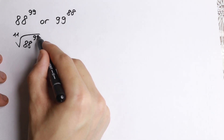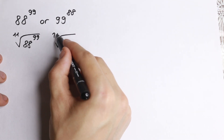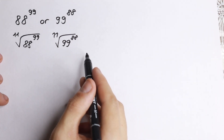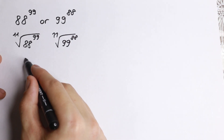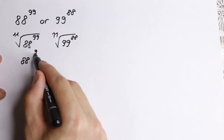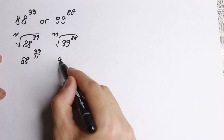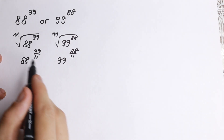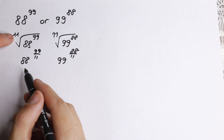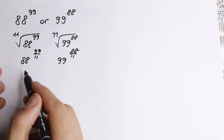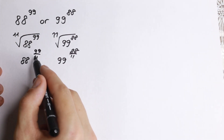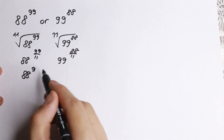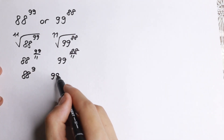So we can easily take the 11th root from both sides. On the left we have 88, and on the right we have 99 to the 88th power. It's really good to rewrite this as a fraction: 88 to the power 99 over 11, and 99 to the power 88 over 11. Since 99 over 11 is 9 and 88 over 11 is 8, we get 88 to the 9th power versus 99 to the 8th power.